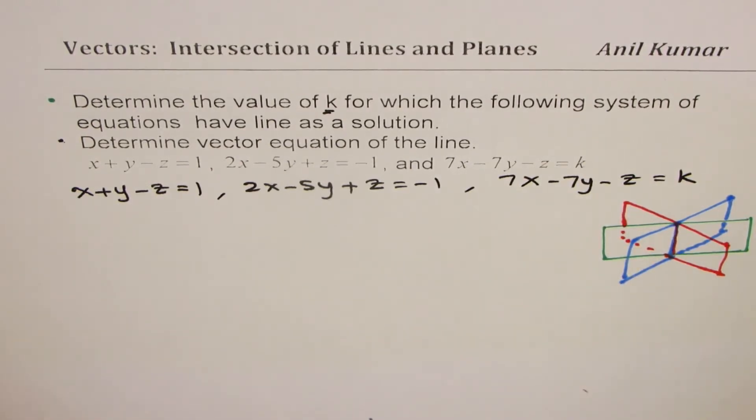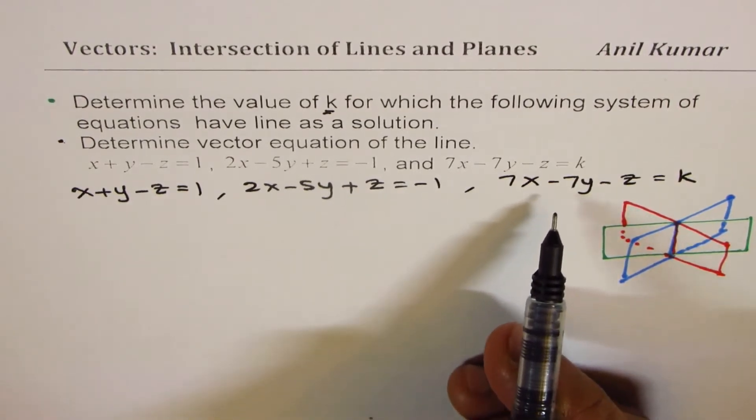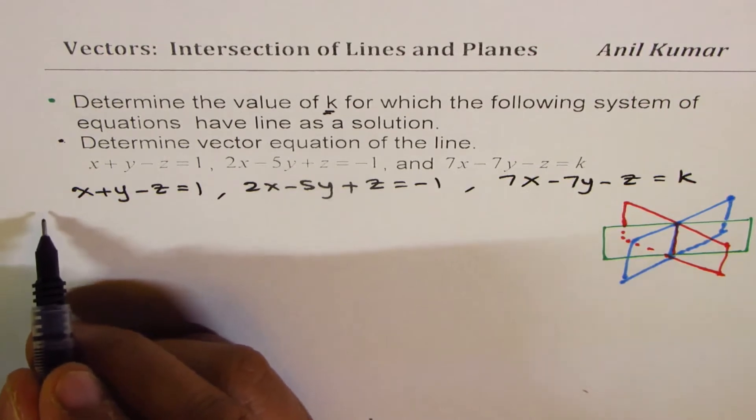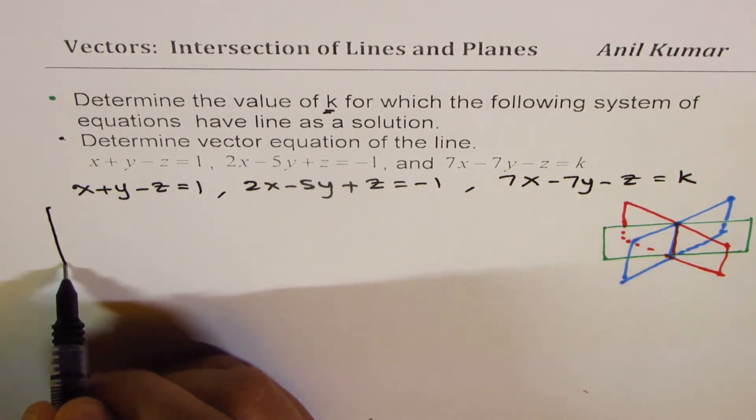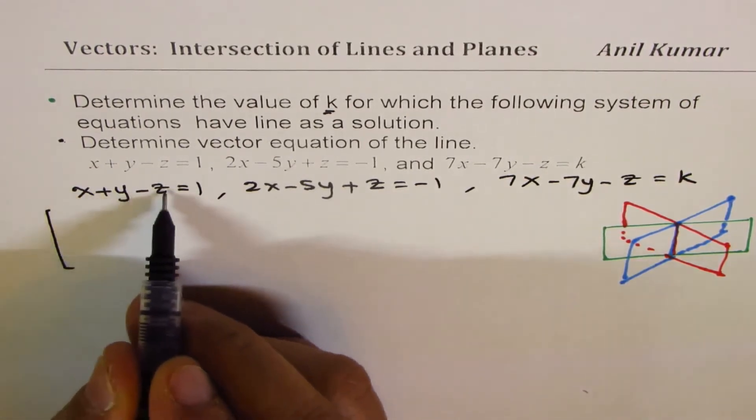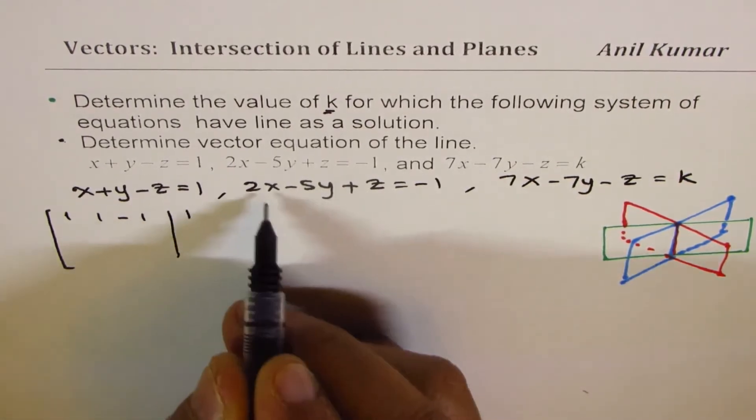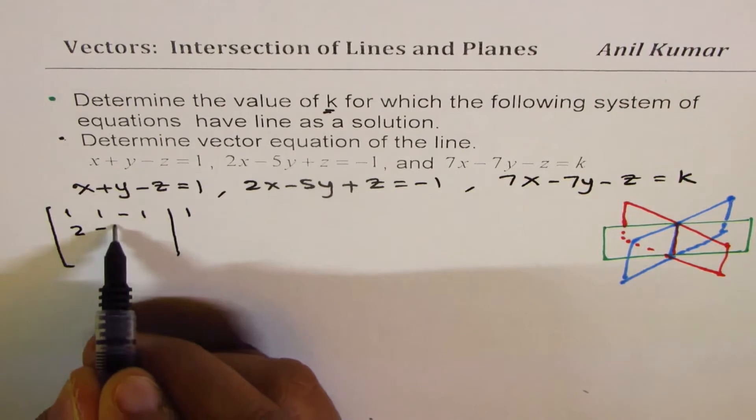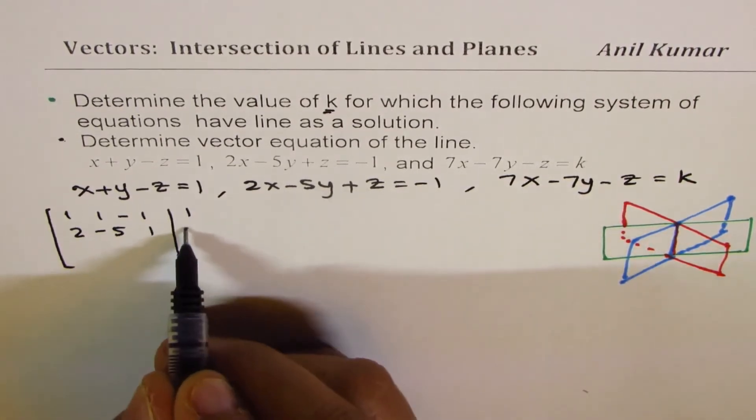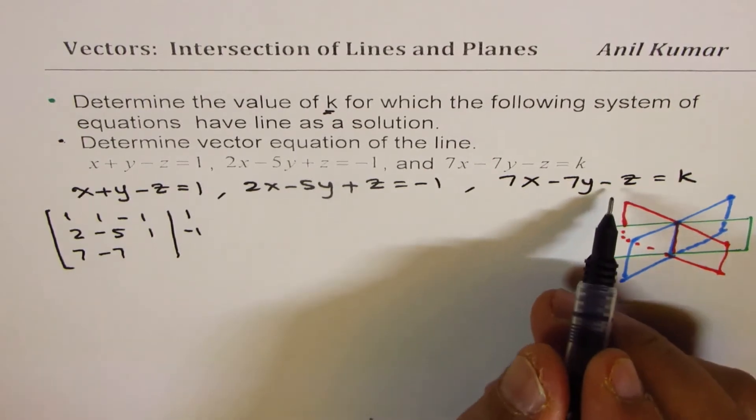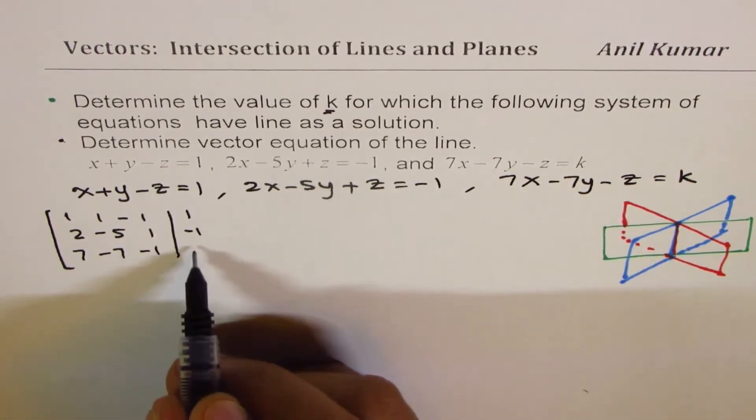we can solve these simultaneous equations. So I'll use the matrix way. So we have these three equations. So let me write the augmented matrix. Writing the coefficients of these equations: 1, 1, minus 1, 1. The second one is 2, minus 5, 1, minus 1. The third one is 7, minus 7, minus 1, and k.